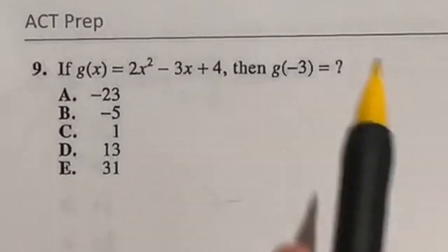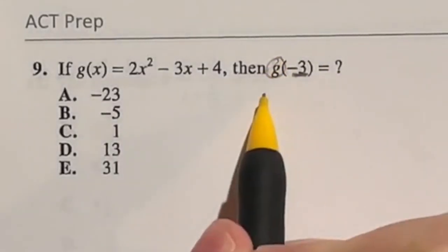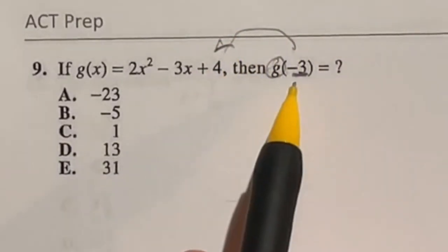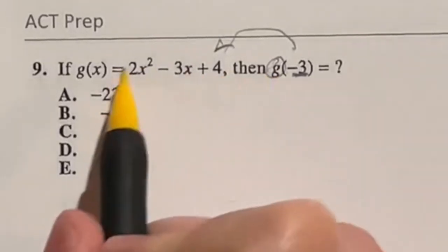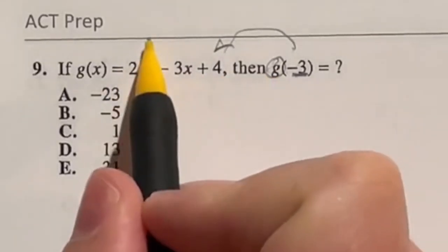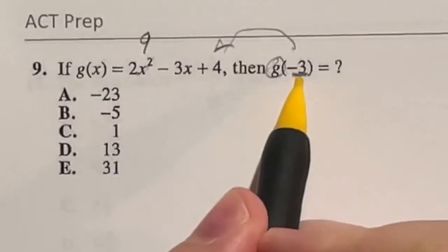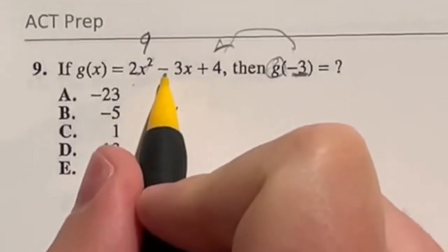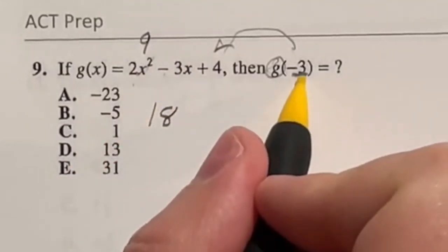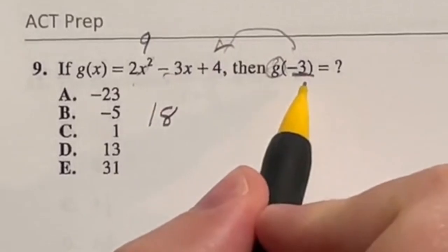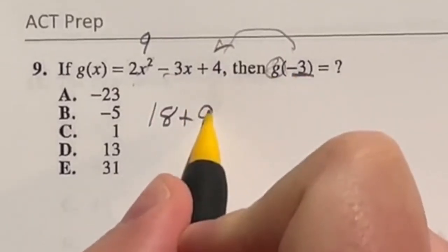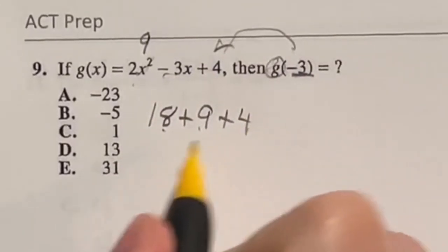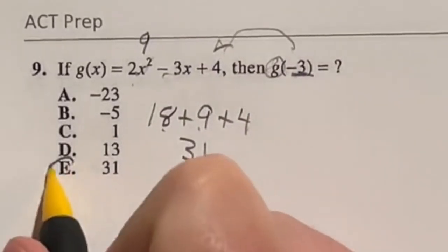So anytime you see a number inside the parentheses like this as a function that just means you're plugging it in everywhere you see an x to the actual equation. So let's go ahead and plug in this negative 3 and see our answer. Well negative 3 squared right off the bat is going to give me 9 and that's positive because it'll be negative 3 times negative 3. That 9 times 2 is going to be 18 for our first term minus 3 times negative 3 again. Well negative 3 and negative 3 multiplied together is going to give me a positive 9, and then we still have that plus 4. So when I combine these three terms together we get 31 by adding them up which is answer E.